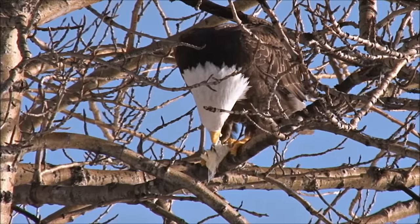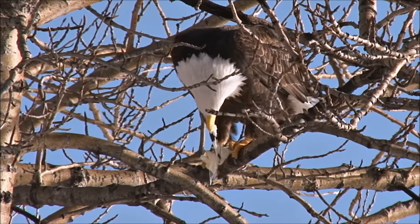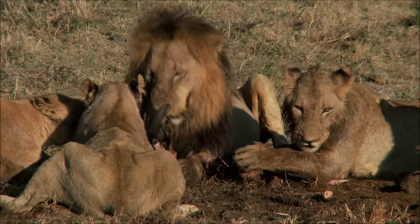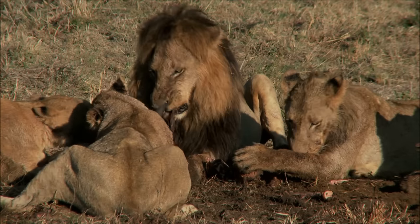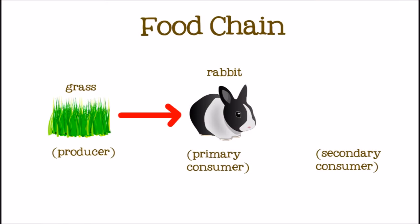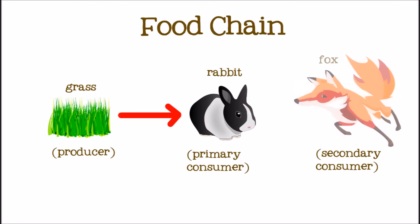Next comes a secondary consumer — the second consumer in the food chain. This consumer is a carnivore and gets their energy by eating other animals. Maybe our rabbit will get eaten by a fox. When the fox eats the rabbit, part of the energy that the rabbit got from the grass is transferred to the fox.